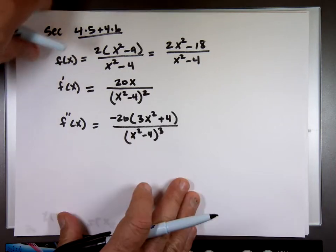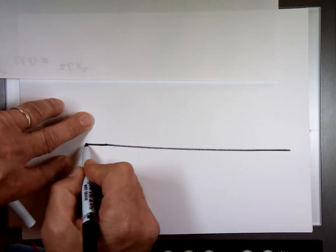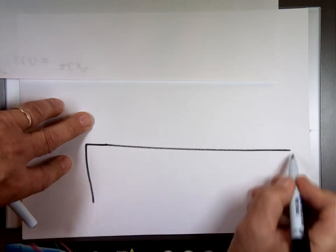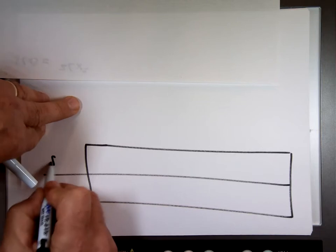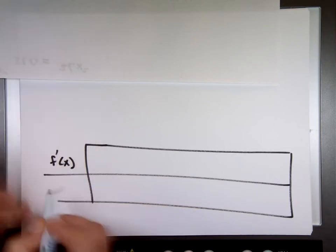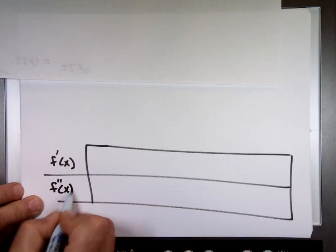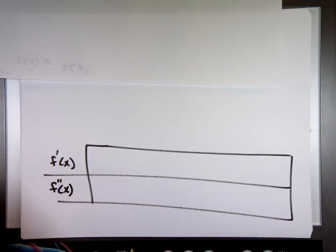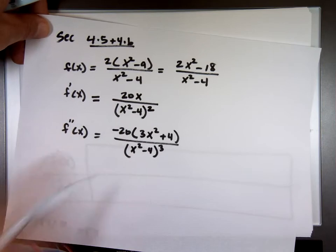Now we need to graph this. To graph it and find all the pieces, I'm going to grab a clean sheet of paper. I'm going to try to write everything we did before: f prime of x, the first derivative, and f double prime of x, the second derivative. I'm giving you these — the first and second derivative.